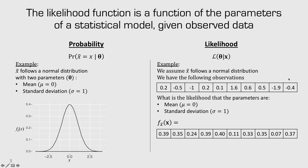The likelihood is just the multiplication of all of these probabilities together, because these are independent events. When things are independent, the joint probability is just the multiplication of all individual probabilities. In this case, the likelihood is 1.63 times 10 to the negative 6. That value doesn't have any directly interpretable meaning, but we'll see how we use it on the next slide.